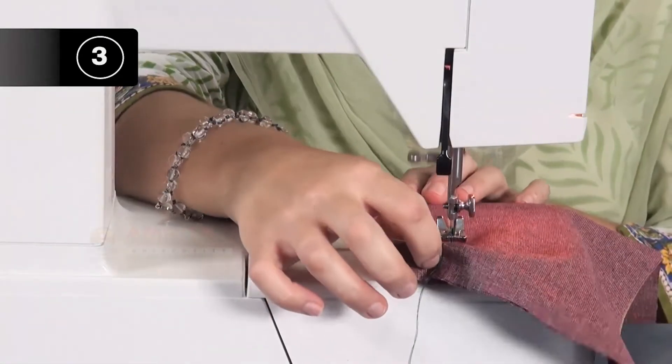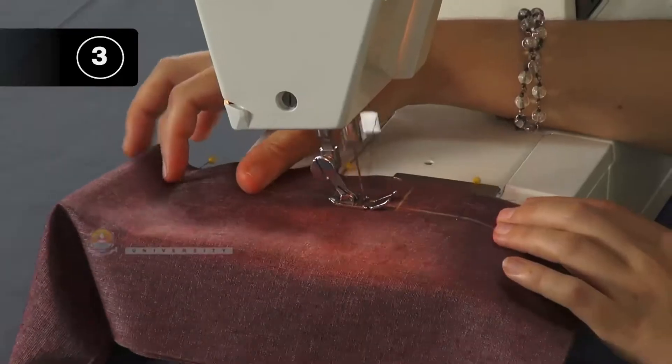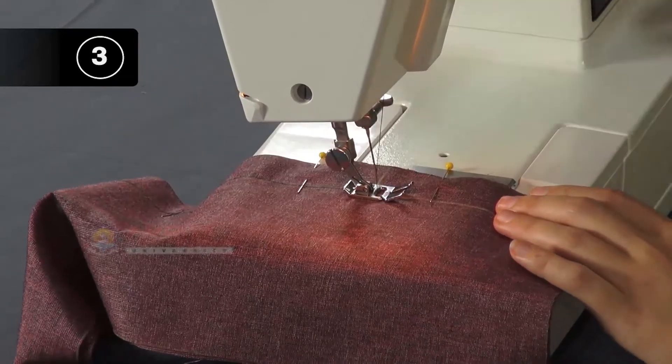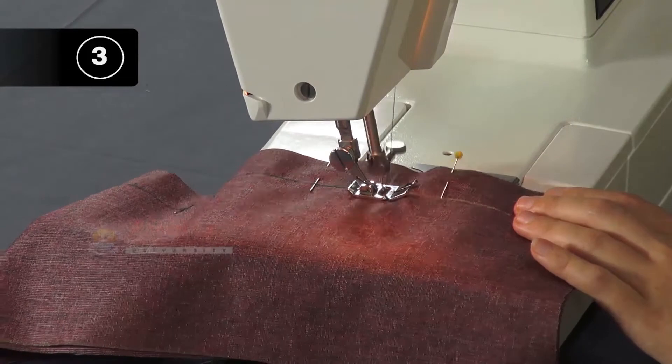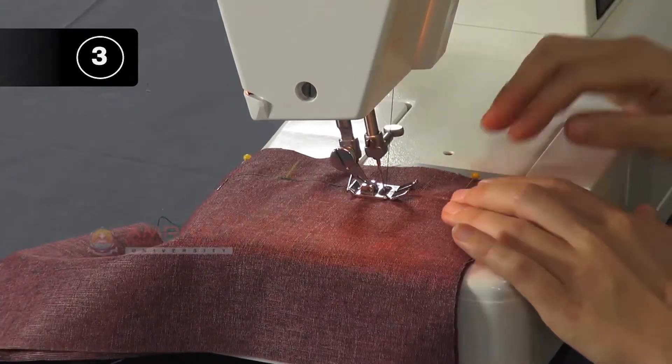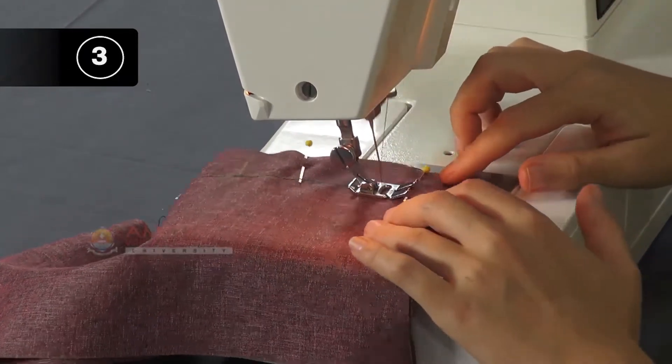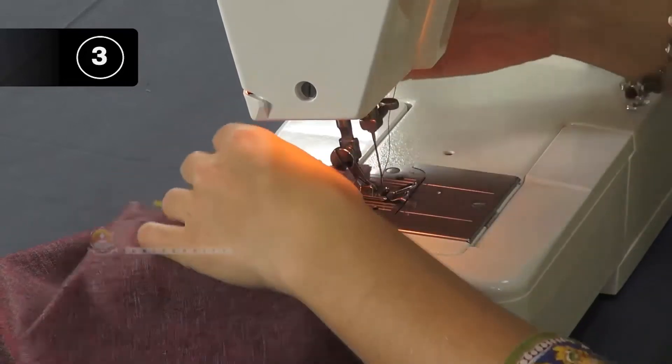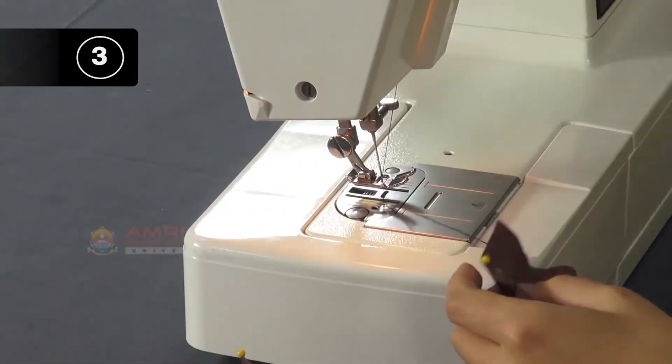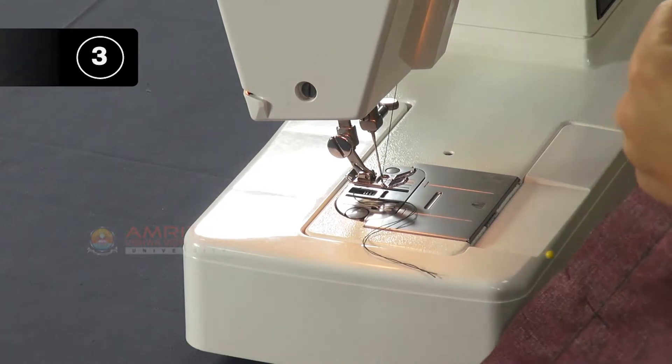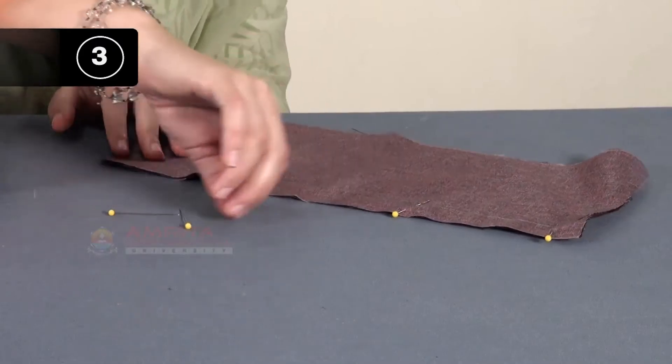Use the reverse stitch going 2-3 stitches back. Then change the stitching length to normal stitch and continue to the end. Now end with the reverse stitch to prevent the seam from opening. Snip the thread with a pair of small scissors. Remove straight pins.